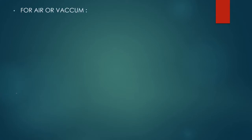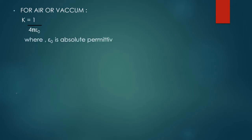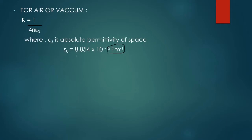This formula is very important — you will have problems based on it, so please remember it. For air or vacuum, we need to find the value of k. k = 1 / (4πε₀), where ε₀ is the absolute permittivity of free space. Its constant value is 8.854 × 10⁻¹² F·m⁻¹. You need to remember the unit, the value, and what ε₀ represents.